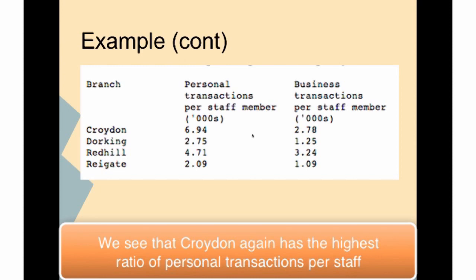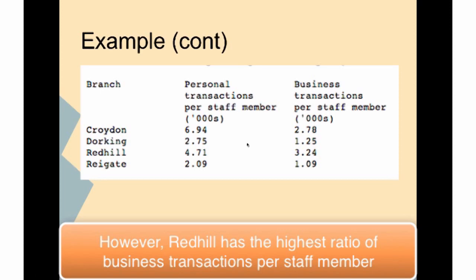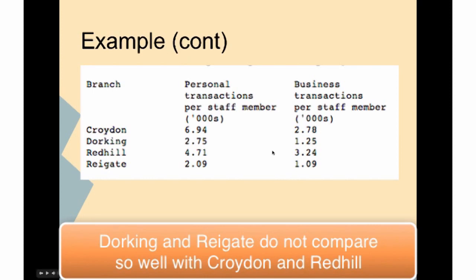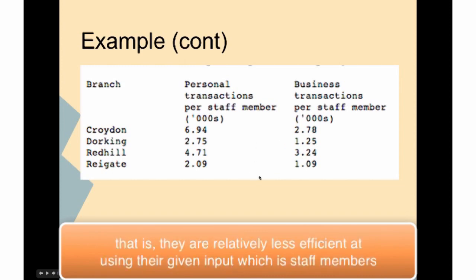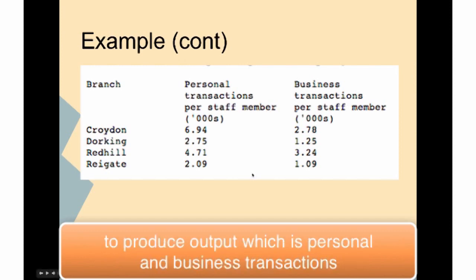We can see that Croydon again has the highest ratio of personal transactions per staff. However, Redhill has the highest ratio of business transactions per staff member. Dorking and Reigate do not compare so well with Croydon and Redhill, so are presumably performing less well. That is, they are relatively less efficient at using their given input resource - staff members - to produce output, the personal and business transactions.